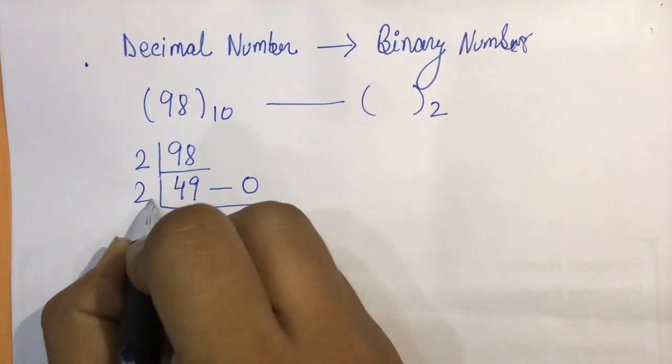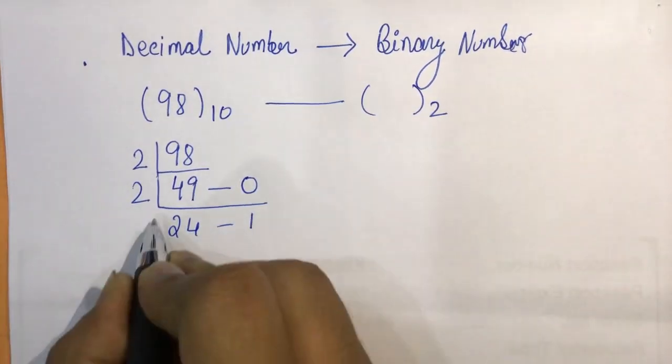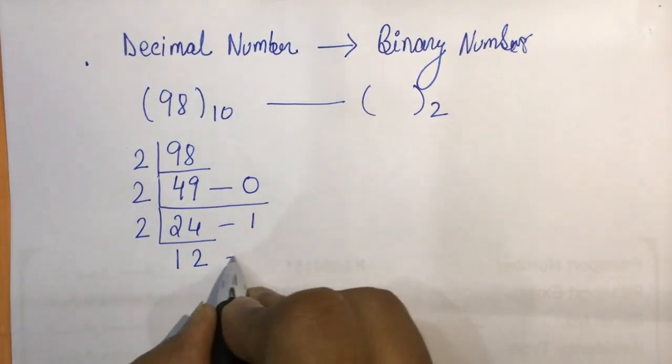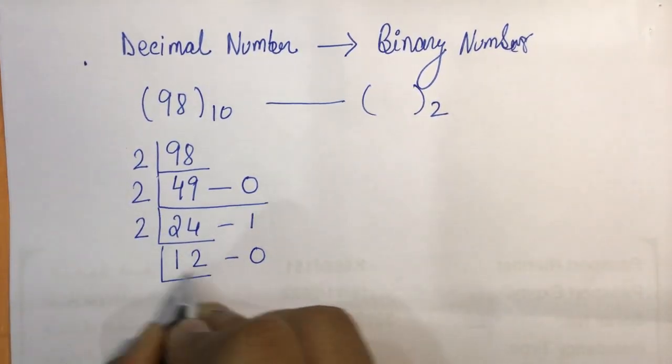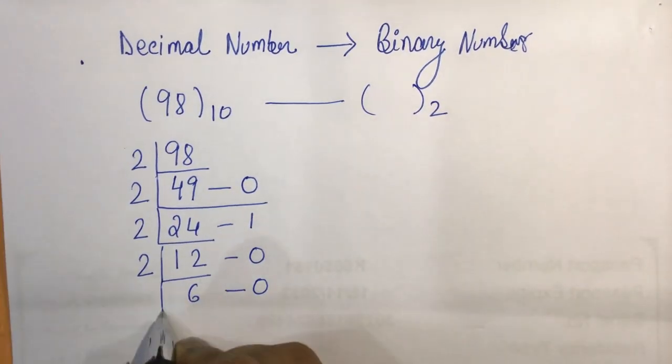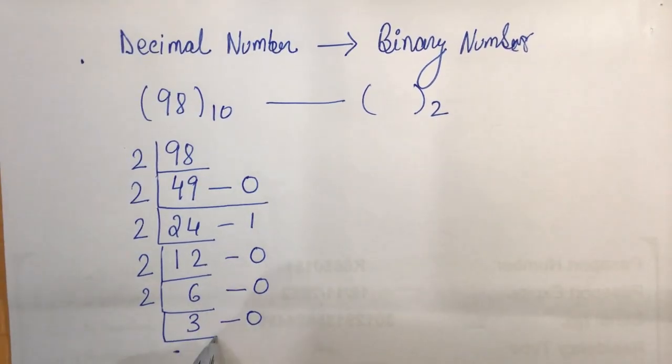Again, if we divide it by 2, we'll get 12 with a remainder 0. We divide it by 2, we get 6 remainder 0. And then again, if we divide by 2, we get 3 with a remainder 0. And then if we divide it by 2, we get 1 with a remainder of 1.